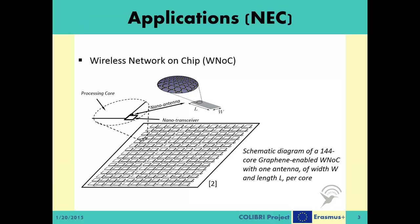Traditionally, network on chips rely on wired solutions. But as the number of cores increases, wired solutions start to be less efficient, and this communication bottleneck becomes a serious performance-limiting factor. The wireless network on chip, on the other hand, utilizes graphene nano-antennas and terahertz signaling to achieve higher communication performance and allows much higher parallelization efforts. Here you can see hypothetical schematics of a 144-core processor utilizing wireless transceivers and graphene antennas.